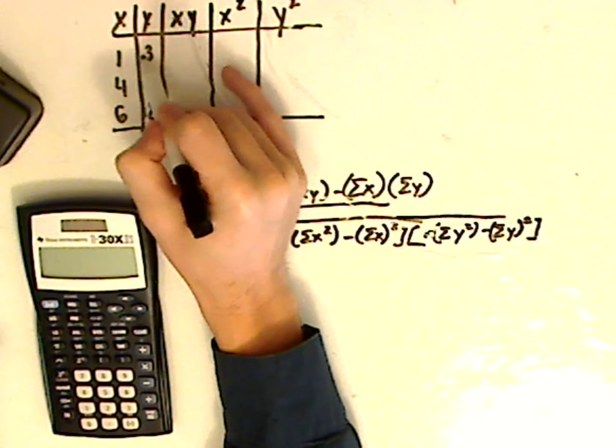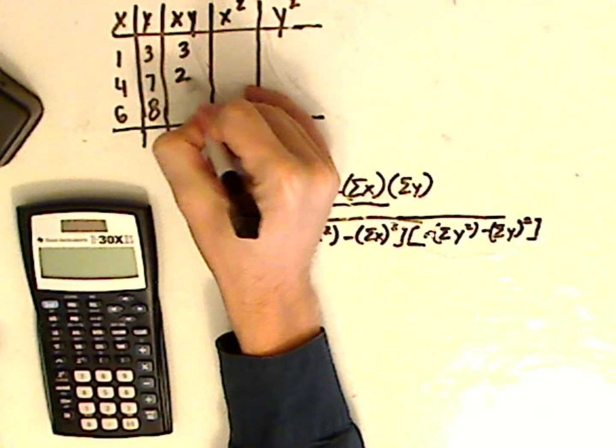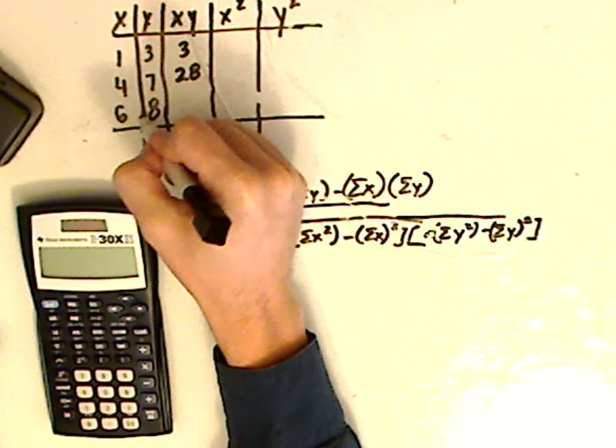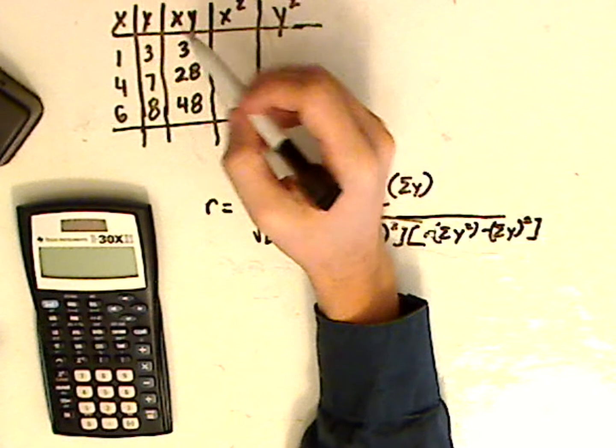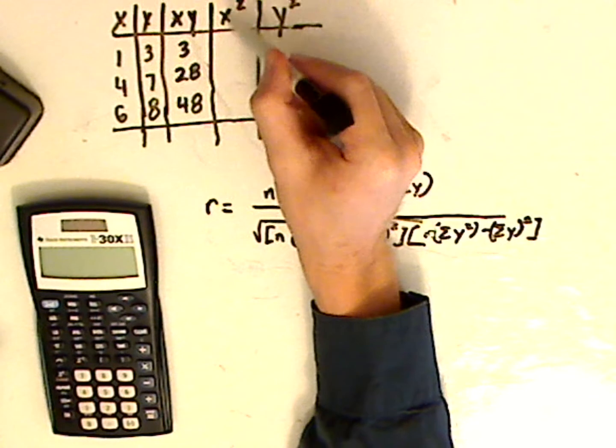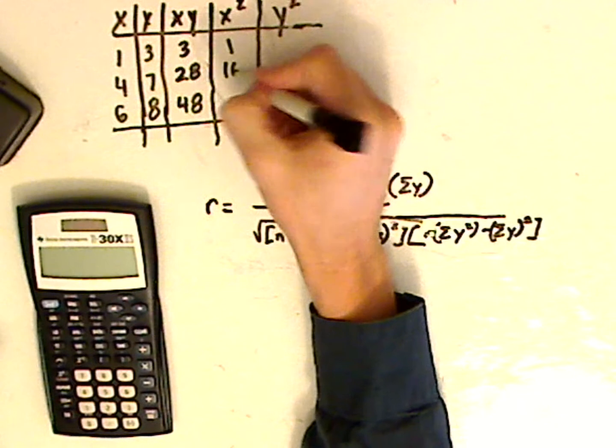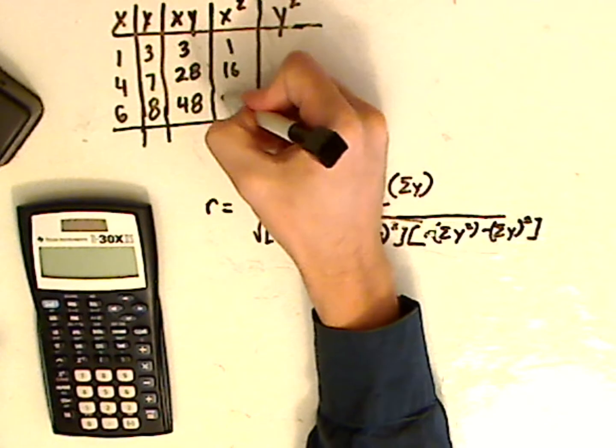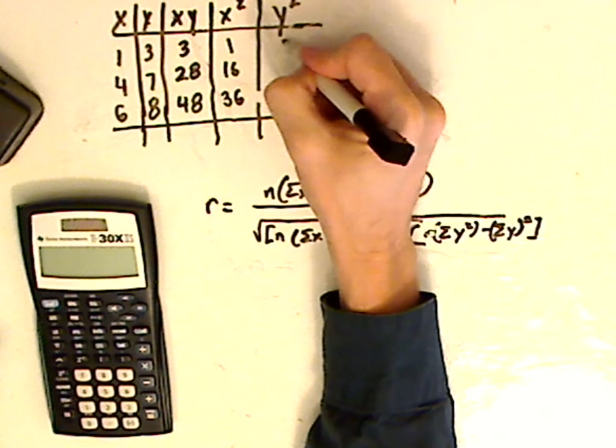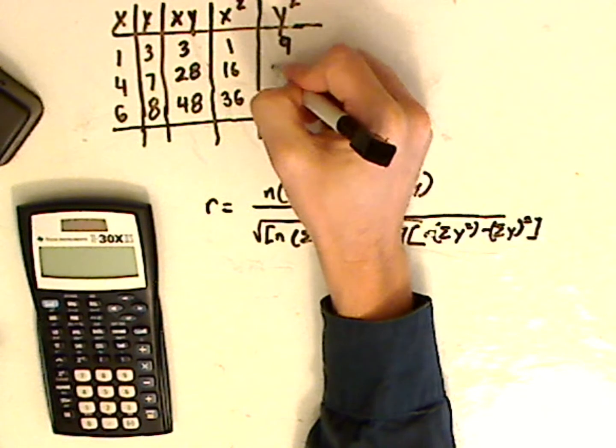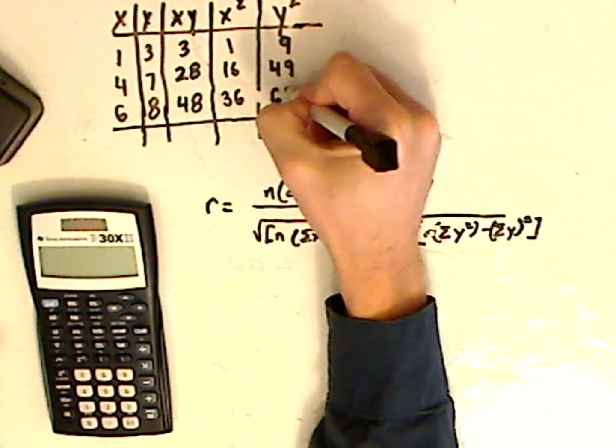Now x times y, 1 times 3 is 3, 4 times 7 is 28 and then 6 times 8 is 48. Now my squares for my x, 1 squared is 1, 4 squared is 16, 6 squared is 36 and then I square my y's. 3 squared is 9, 7 squared is 49 and 8 squared is 64.